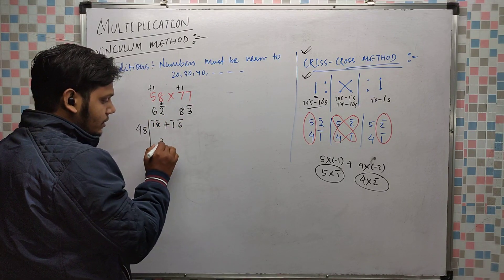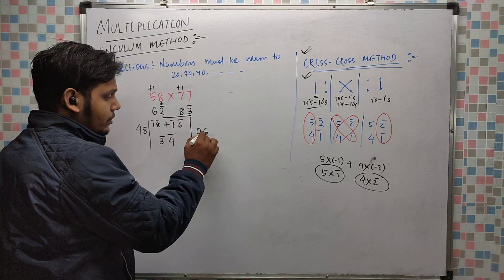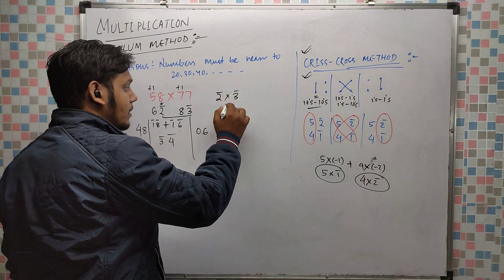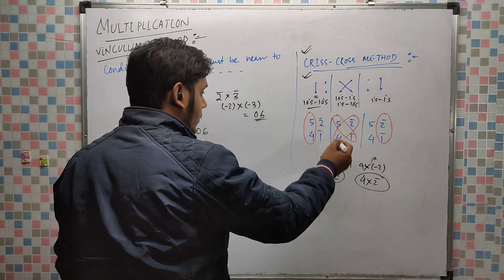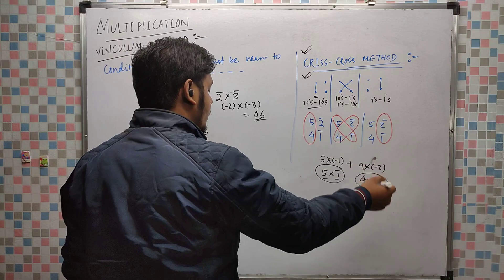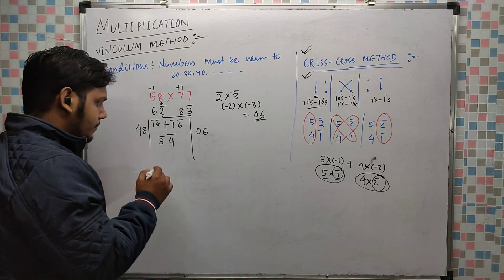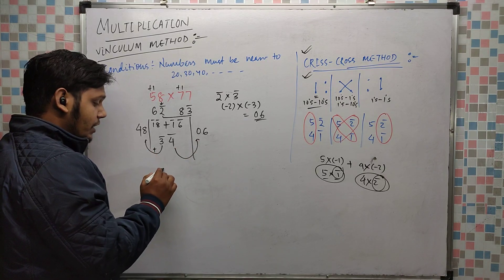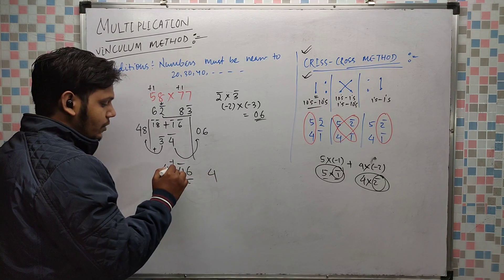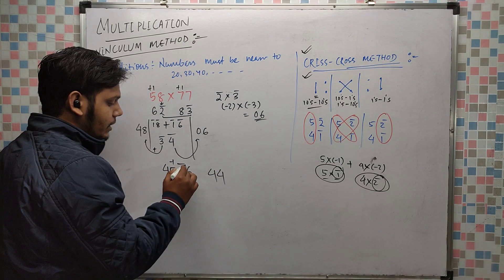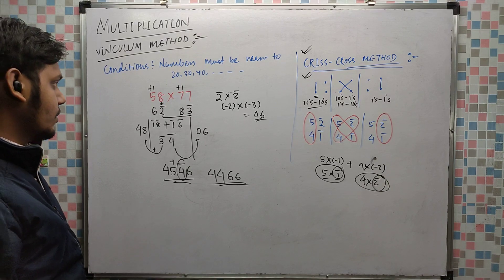That gives 3 4-bar, 34-bar. Now for the units: 2-bar and 3-bar — minus into minus 2 times minus 3 becomes plus. Since one number is negative, the sum will be negative. Now balance: 48 minus 3 equals 45. Then 4-bar and 0, and thereafter 6. Decrease by 1: complement of 4 is 6. So 4466 is your answer.